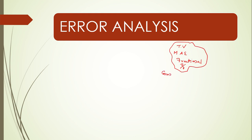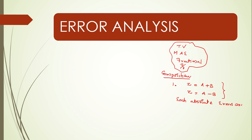Composition of errors is a very important case. For Z equal to A plus B or Z equal to A minus B — addition and subtraction — the simple process is that each absolute error is added together.